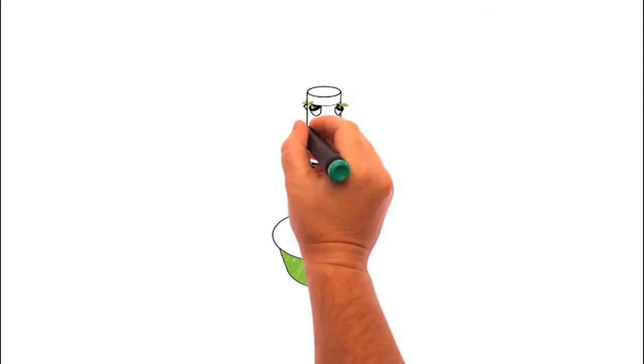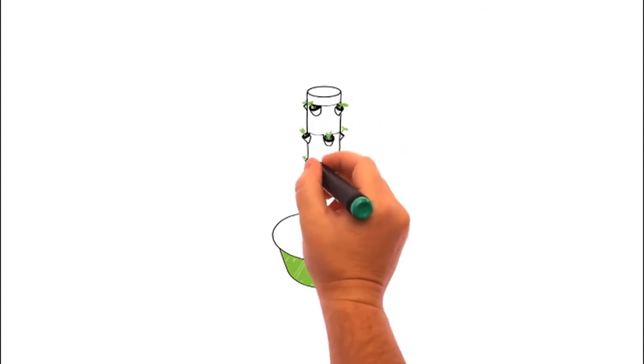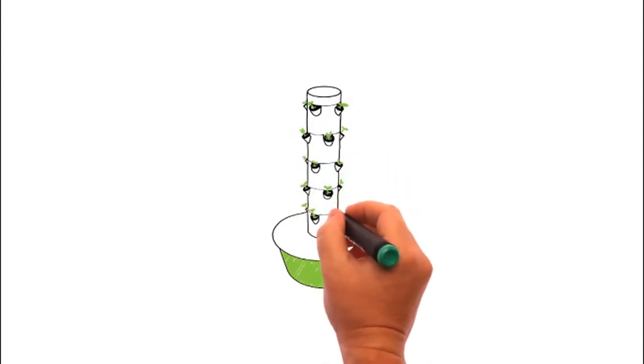The process begins once the seedlings have been placed in your Tower Garden. Here they will be nourished with Tower Tonic Nutrient Solution.